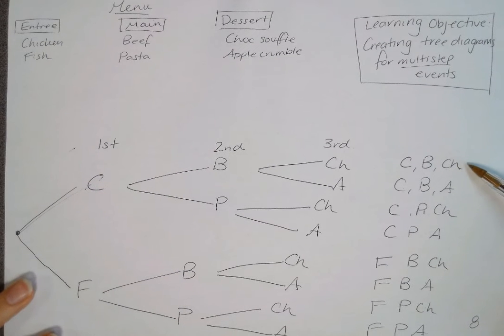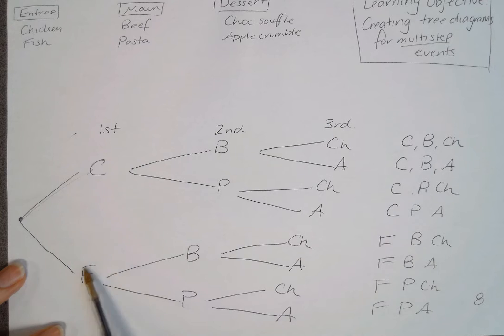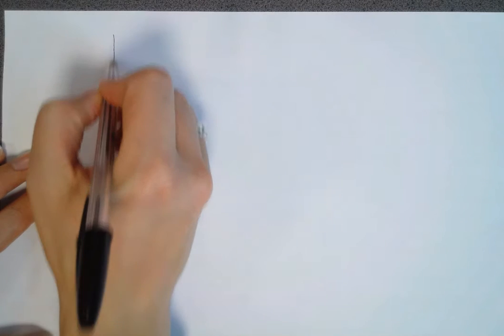In our last tree diagram example, we looked at multi-step events where each outcome doesn't have an effect on the next one. But I'm going to flip over the page and do exactly the same type of tree diagrams, but this time each event will have an outcome and will affect the next choice.